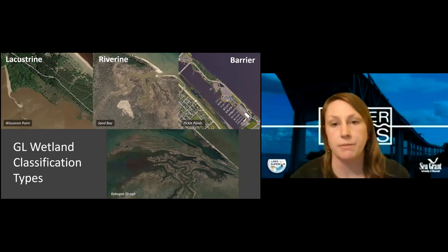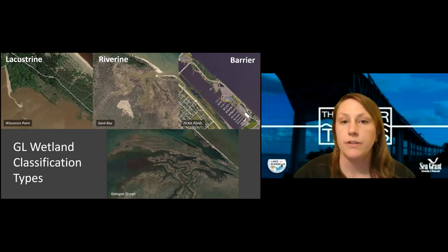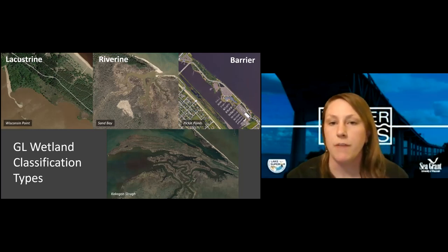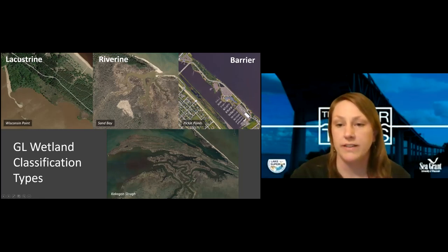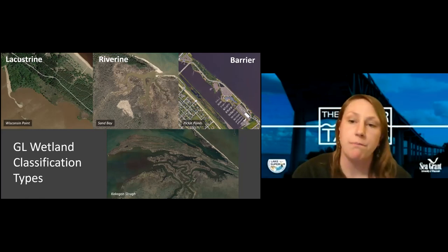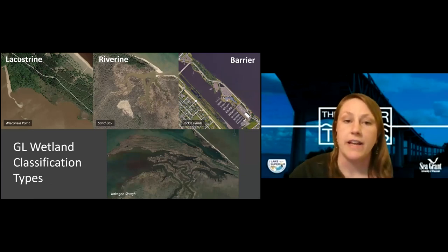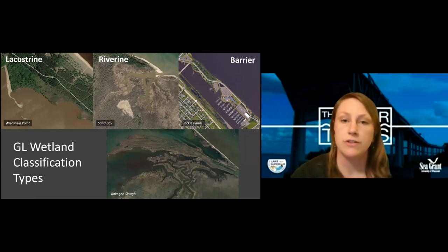The final type is a barrier system — typically separated or nearly separated from the lake by some type of barrier. This example near Barker's Island is called Pickle Ponds. That barrier itself is created by a man-made old railroad bed; typically it would be a sandbar. These are usually the least impacted because of their separation from the lake — less wave action, fewer nutrient and temperature changes — making them more stable environments.